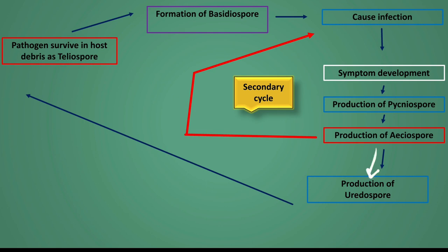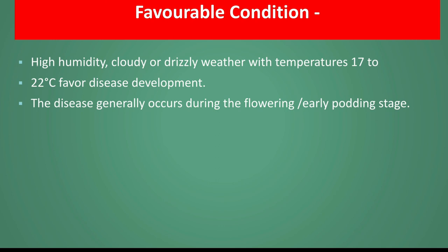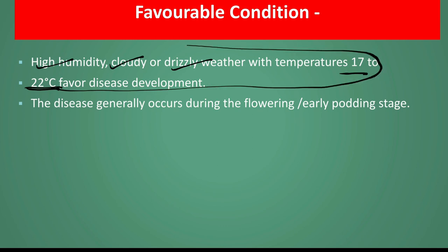The aeciospores lead to uredospores, and uredospores lead to teliospores. The teliospores survive in the absence of the crop, completing the life cycle. Favorable Conditions: High humidity, cloudy days, drizzling, and temperature 17 to 22 degree centigrade. The disease is most severe at the early podding stage.